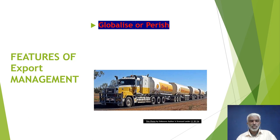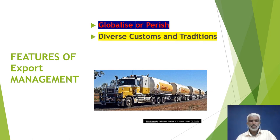The next point is globalization. Foreign trade is the need of each country to export goods and services at the global level. Next is diverse customs and traditions — export markets differ in languages, customs, and traditions. Therefore, the exporter may not be able to cope with this diversity and has to be selective, dealing with markets where he can easily handle or overcome such differences.